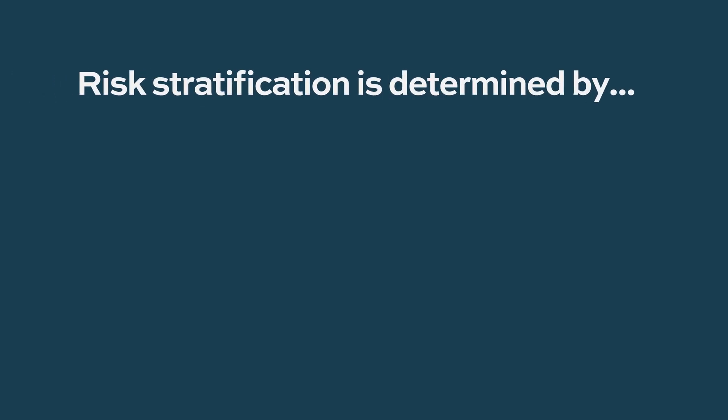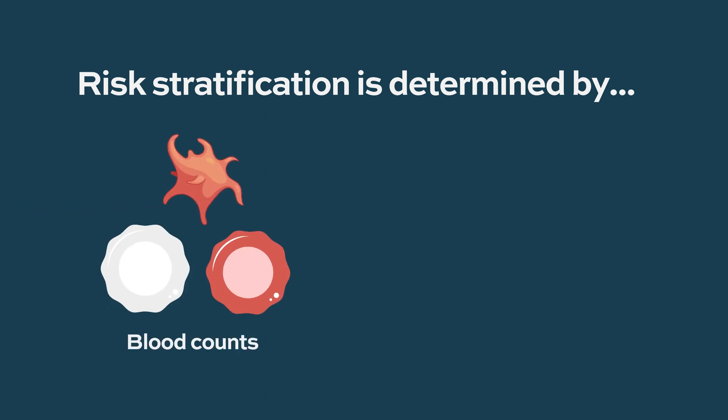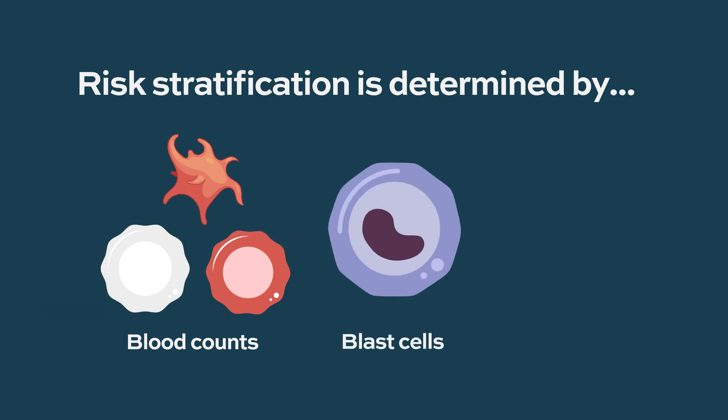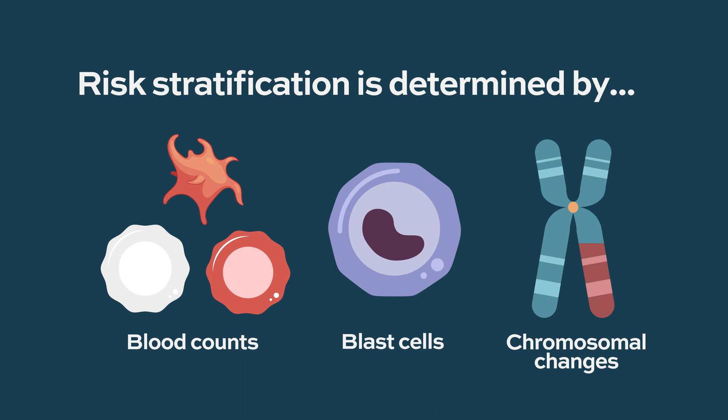High and low risk MDS are defined by scoring systems that take into account a patient's blood counts, how involved their bone marrow is with bad cells — which we call blasts — as well as chromosomal changes, which is how the DNA in the MDS cells looks. Patients with a low score are called lower risk; patients with a higher score are called higher risk, and we treat them differently. A new scoring system also takes into account the mutations that MDS patients can have, allowing us to better refine who is low risk and who is high risk.